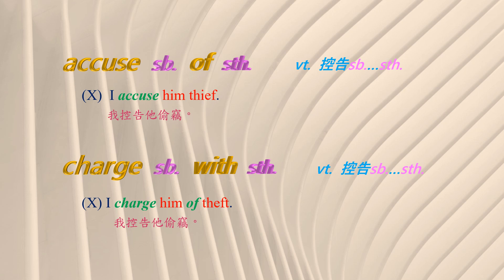两个都是动词片语，后面都需要加上两个受词。After 'accuse' and 'charge,' we put somebody. After 'of' and 'with,' we put something. 在动词accuse和charge后面，我们放上somebody；在介词of跟with后面，我们放上something.